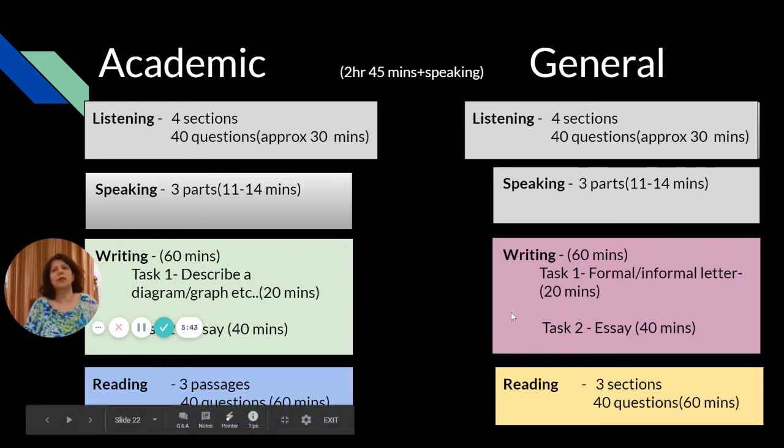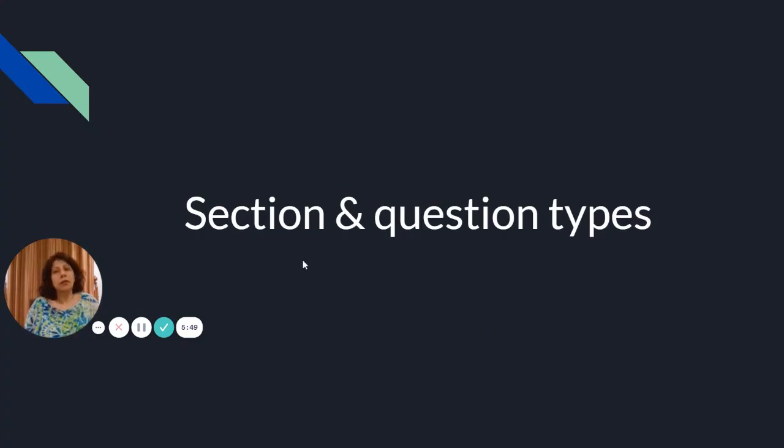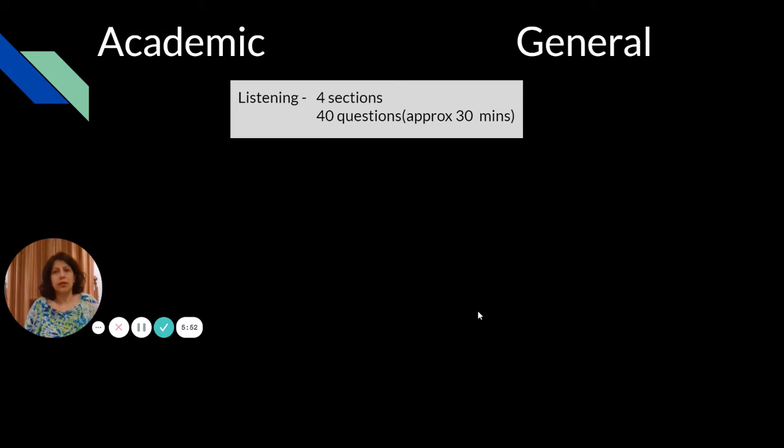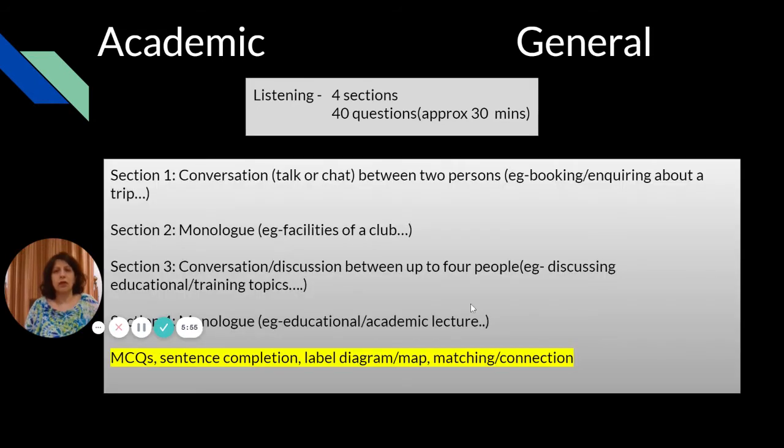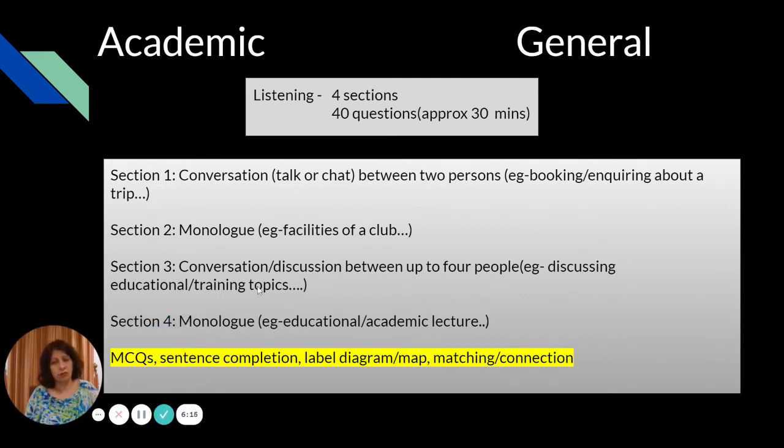Coming to the sections and question types - in academic and general it's the same. Listening will have four sections. Section one will have conversations between two persons, for example booking or inquiring about a trip. Section two will be a monologue. Section three will be a conversation between two to four people. Section four will be a monologue, an educational or academic lecture.